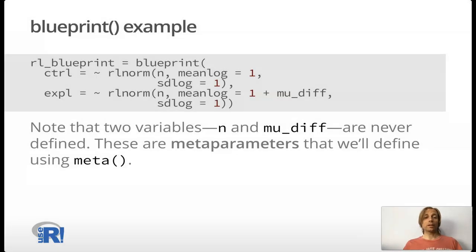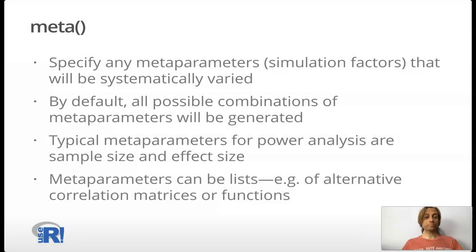Here, just to make this more interesting, I'm using log normal rather than just a random normal, which is analytically straightforward. In the blueprint I have a tilde, which I'm using the per formula function syntax. And instead of having to refer to anything else, I can just say n for RL norm n for the sample size. And I'll define that later. And then for the experimental variable, I have n and then I also have mu underscore diff. Note that these two variables n and mu diff are never defined. These are meta parameters that we'll define using meta.